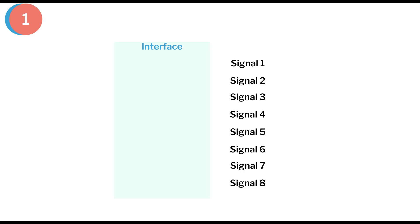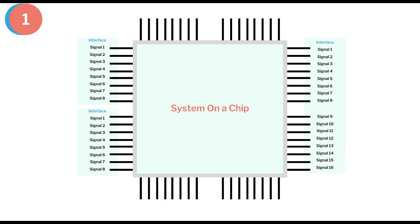An interface is a block that encapsulates signals. Similar and related signals are grouped inside one interface, which is then driven by a driver. For example, consider a system on chip with input and output pins — the interface can cover related signals into one entity so that it becomes easy to manipulate signals at the pin level using a driver.